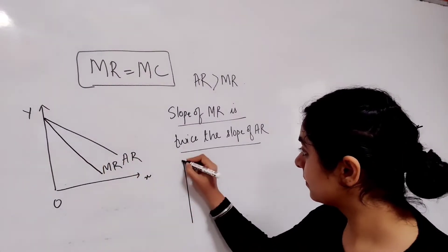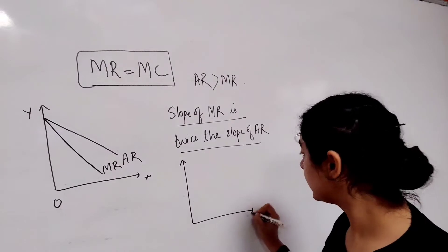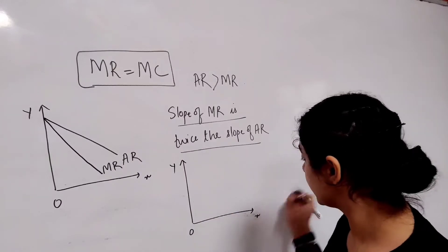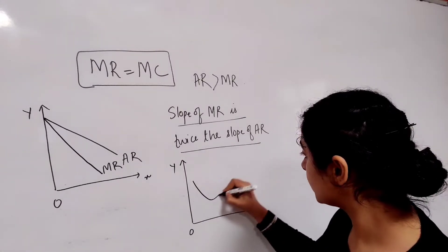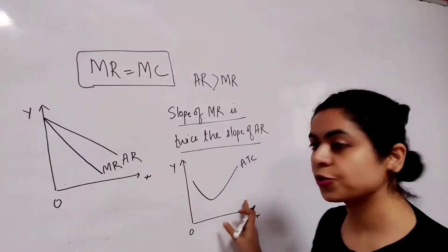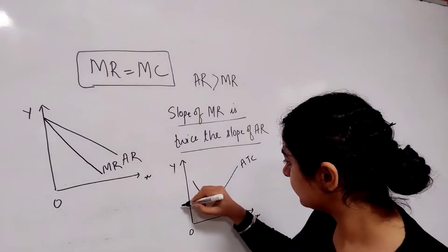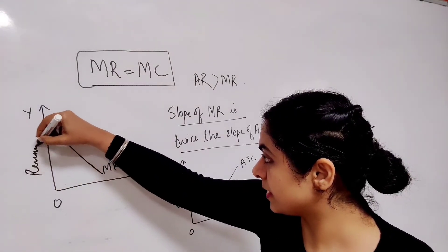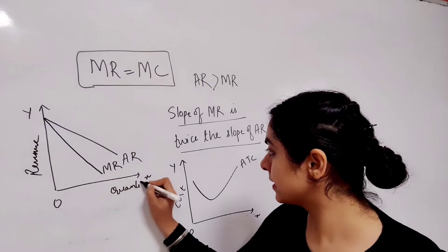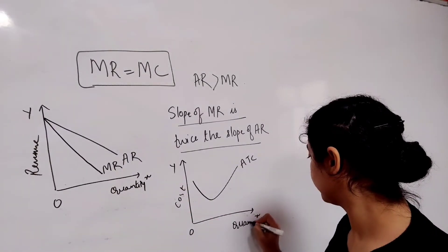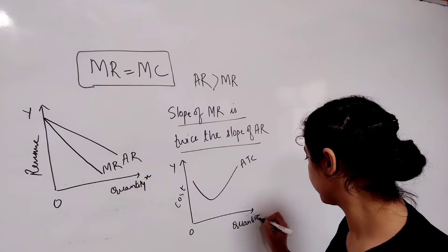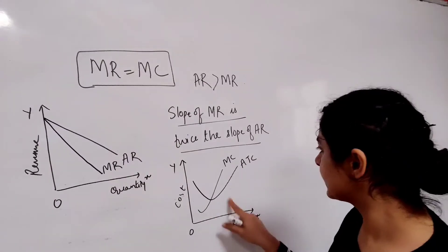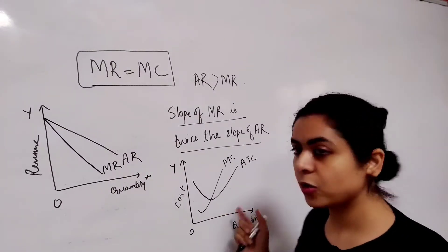Now let us draw the average total cost and marginal cost curve for a monopoly firm. This is our average total cost curve — here we have cost on the vertical axis and quantity on the horizontal axis. The marginal cost curve intersects the average total cost at its minimum point.